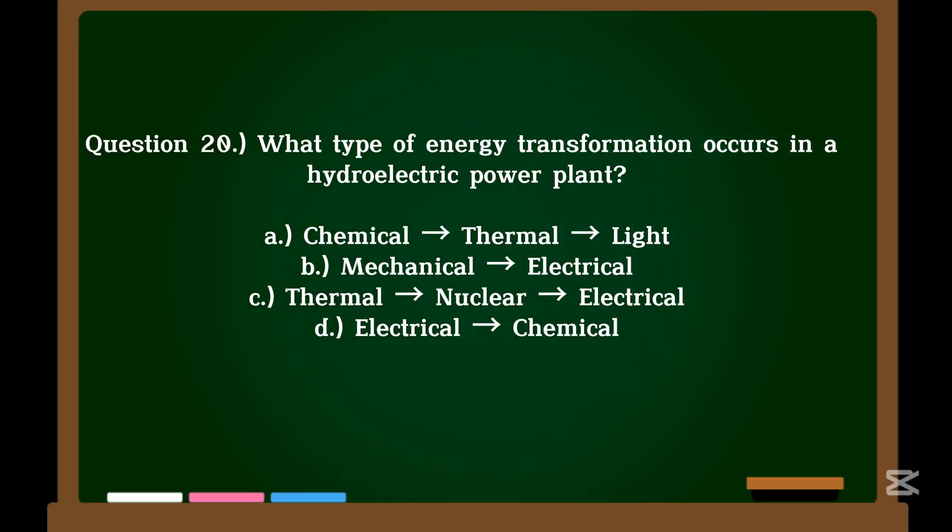Question 20. What type of energy transformation occurs in a hydroelectric power plant? A. Chemical → thermal → light. B. Mechanical → electrical. C. Thermal → nuclear → electrical. D. Electrical → chemical.